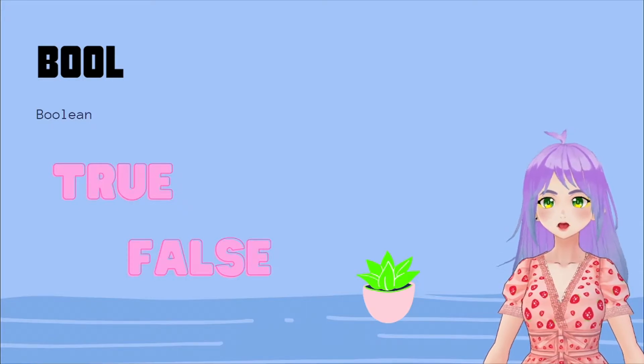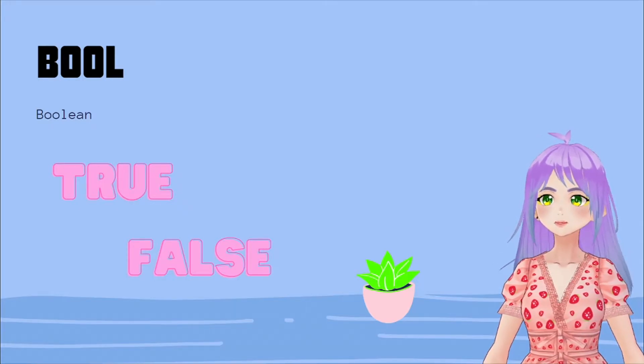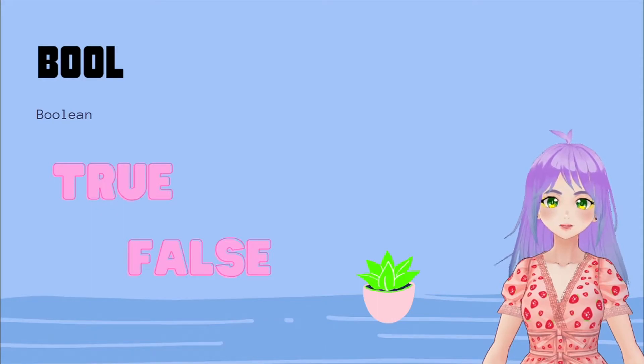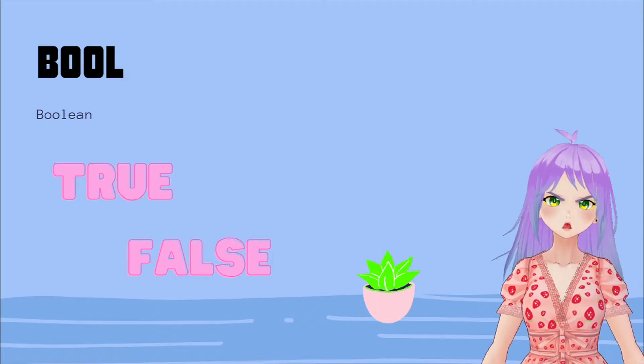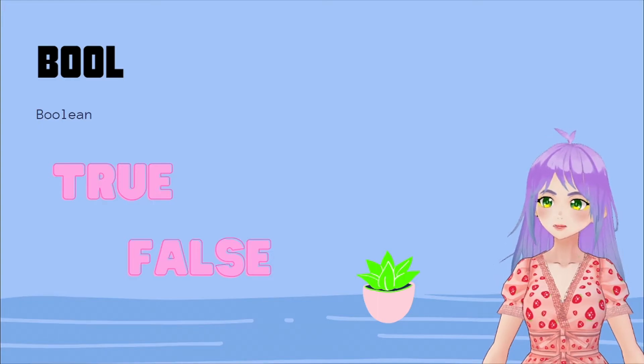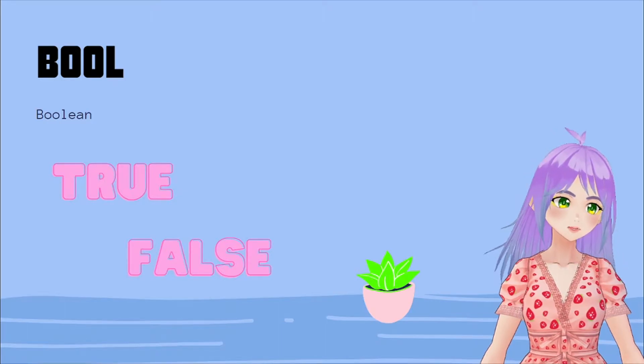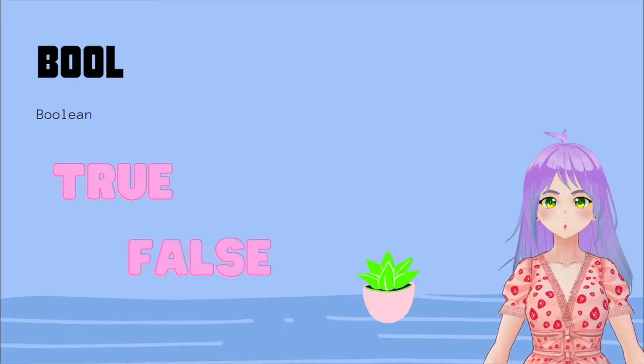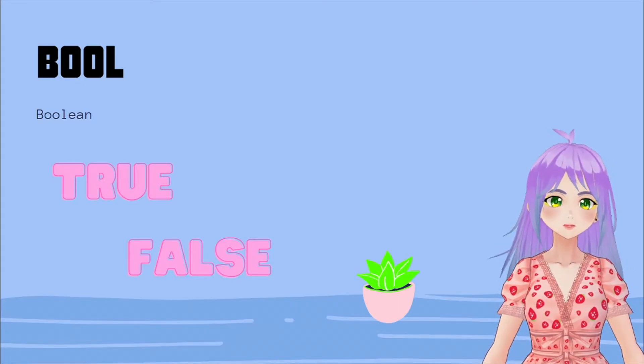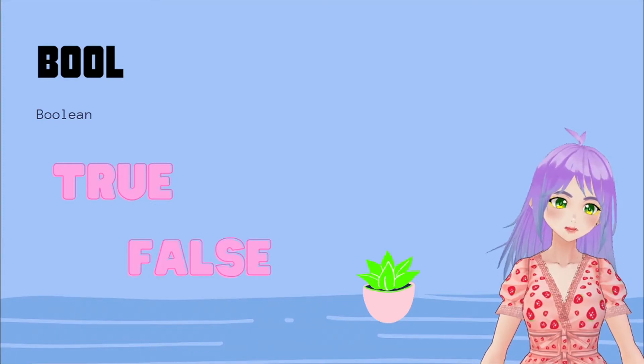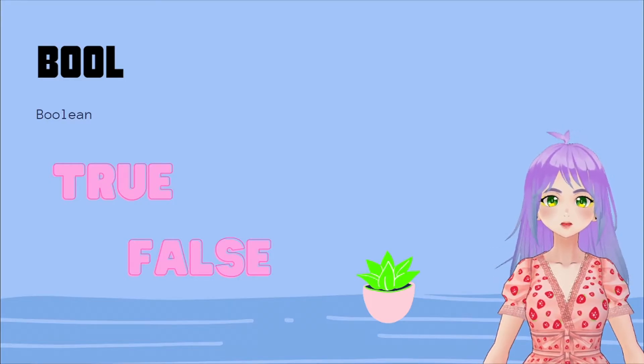And one example in real life that we can mention is when we have data from students that we want to differentiate by approved students and not approved students. Or if you have health-related database, you can have information about drinkers and non-drinkers. But if you are interested more about this specific type of data that are booleans, you can leave it in the comments so I can make one video only for boolean data.